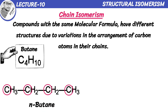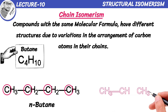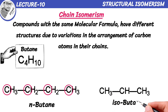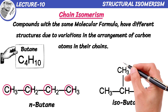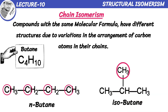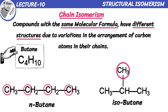However, due to chain isomerism, there are other possible structures for butane. Another isomer of butane is called isobutane. In this structure, instead of a straight chain, one of the carbon atoms branches off with 3 hydrogen atoms attached to it, creating a methyl group. This branching gives butane a different structure and different properties. So both of these isomers have the same molecular formula but different structures, known as chain isomers of butane.